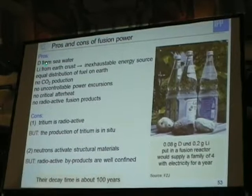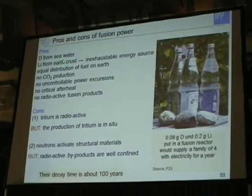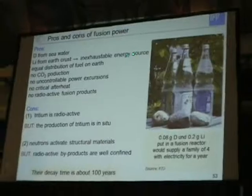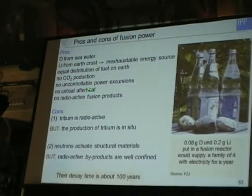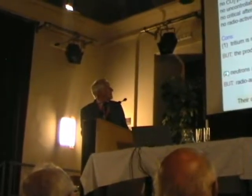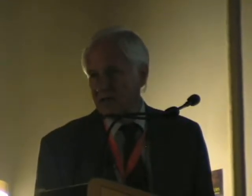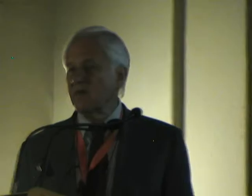The pros and cons of fusion power: deuterium is in seawater, everywhere. Tritium is produced from lithium from the Earth's crust — Austria has a lot of lithium in its mountains. At the end, this would be an inexhaustible energy source. The fuel is distributed equally on Earth. There is no CO2 production, no uncontrollable power excursion, no criticality risk, no radioactive waste as such. We have to work with tritium, but this is produced in situ inside the reactor. The negative element is that deuterium-tritium fusion involves a neutron, which activates structural materials, making them radioactive — not the fusion products, but the structural material. However, the by-products decay within about 100 years — not with the long half-life of plutonium at 24,000 years — so after 100 years one is in a hands-on situation.